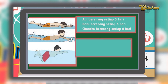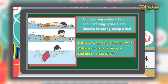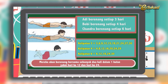Perhatikan jawabannya. Kelipatan 3 adalah: 3, 6, 9, 12, 15, 18, 21, 24, 27, dan 30. Kelipatan 4: 4, 8, 12, 16, 20, 24, dan 28. Kelipatan 6: 6, 12, 18, 24, dan 30. Perhatikan, di sini ada bilangan yang sama yaitu 12 dan 24. Berarti kesimpulannya, mereka akan berenang bersama sebanyak 2 kali dalam 1 bulan, yakni hari ke-12 dan hari ke-24.